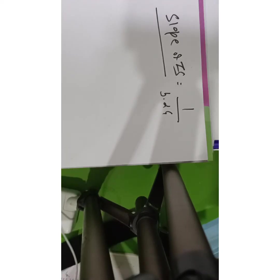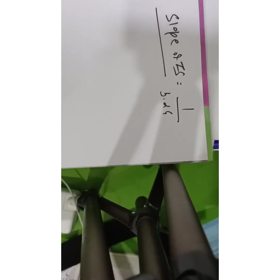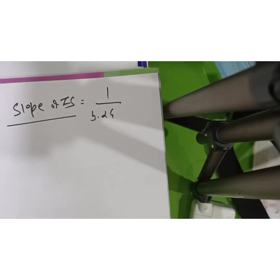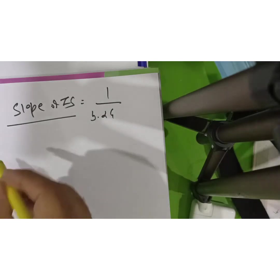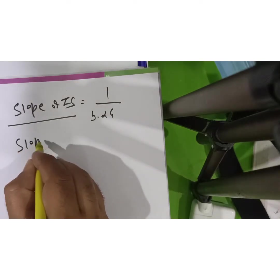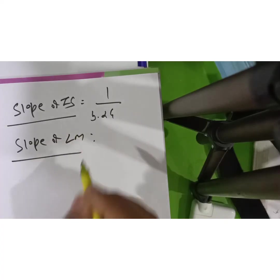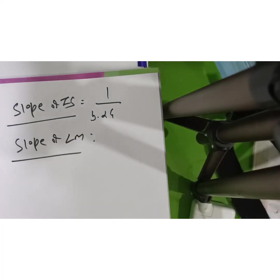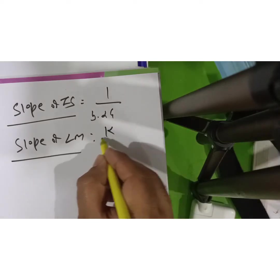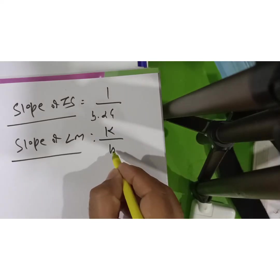Similarly, you can solve for the slope of LM. If the question asks for the slope of LM, you can simply use the formula K divided by H.